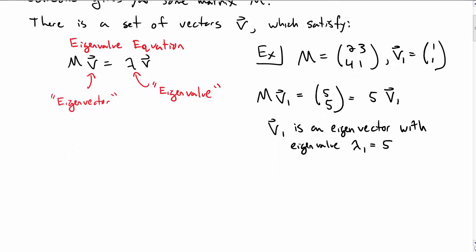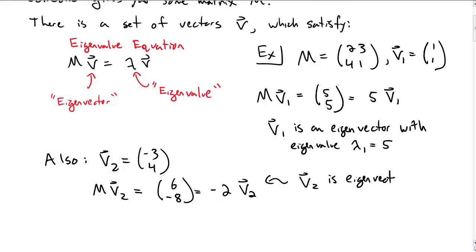It turns out there's another eigenvector for this matrix and I'm just going to give it to us. So V2 is equal to (-3, 4). Let's take M times V2 and after some calculation you find that it's -2 times V2 back again. So in that case I would say that V2 is an eigenvector and it has an eigenvalue lambda 2 equal to -2.